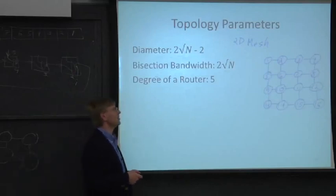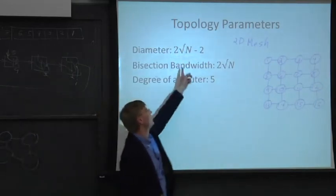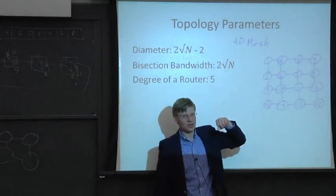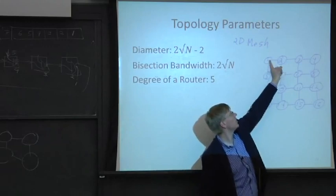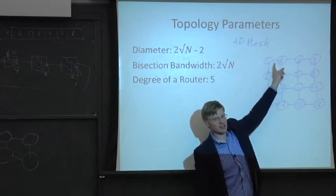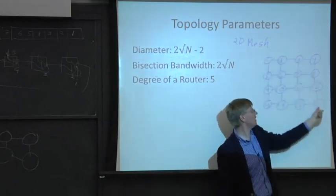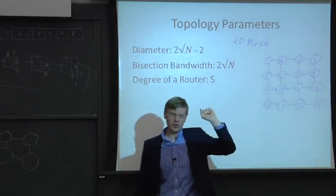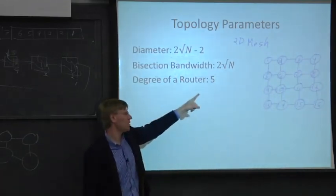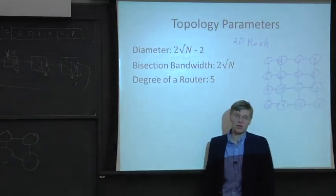And if we generalize this, we see that it's actually 2 square root of n minus 2. We subtracted 2 here because it doesn't take a hop to get to yourself. If you do the analysis here, you'd say, well, from a big O notation, this should be square root of n. But we don't have to make sort of the last hop and the first hop, if you will, to get in and out of the node. So we subtract off 2.